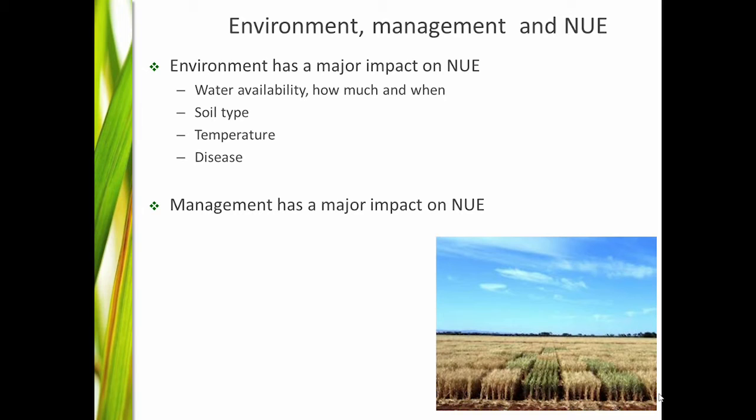Management also has a major impact on NUE. If you look at how nitrogen is used throughout Australia, it varies, and there's massive variation internationally in how nitrogen is applied. Australian farmers are fairly good — they try to match nitrogen supply to the demand of the plant and to the season, because they don't want too much biomass they can't convert into grain. That's not the same issue you get in Europe, where you don't generally have those dry finishes we have here.